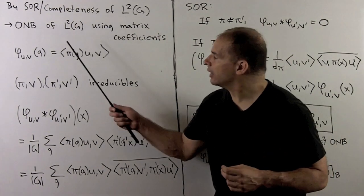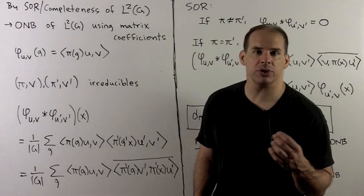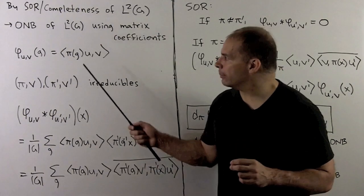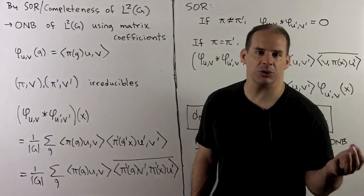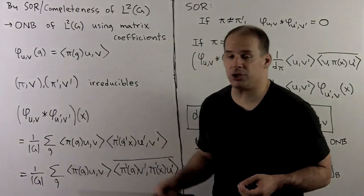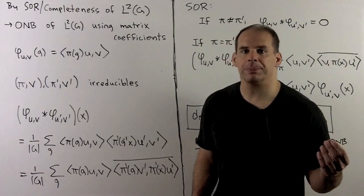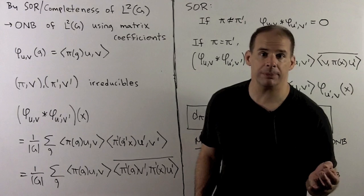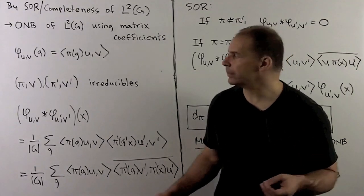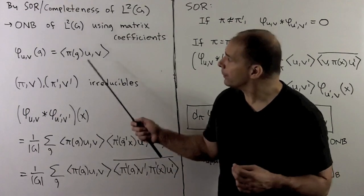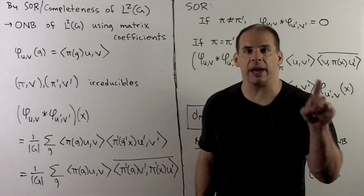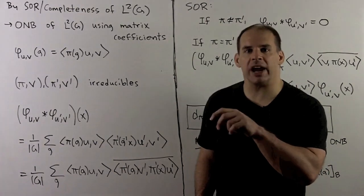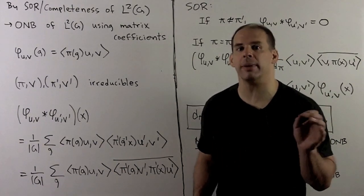For matrix coefficients, we have a unitary representation pi, and we pick two vectors u and v. The matrix coefficient phi_{u,v} will be a function from the group to the complex numbers. If we evaluate at g, we are just taking the inner product of pi(g)u with v. Why 'matrix coefficient'? We choose an orthonormal basis for the vector space and pick u and v from the basis. Then, with respect to the basis, each pi(g) is a square matrix. Our choice fixates on, say, the (i,j)-th entry; as we let the group elements range, we get a function out of that entry — so, matrix coefficient or matrix entry function.